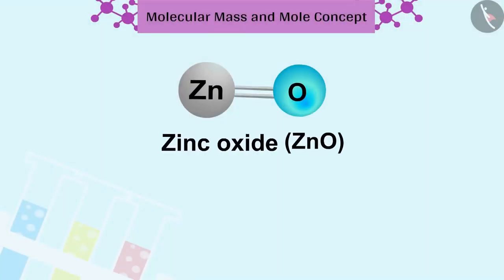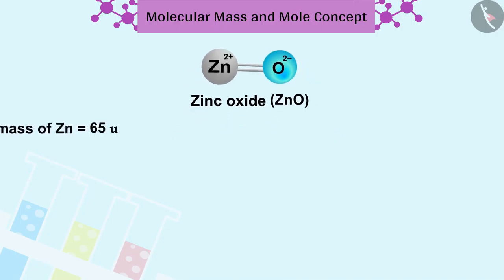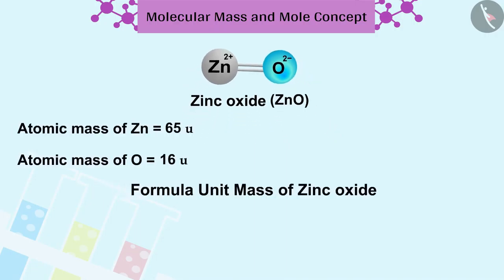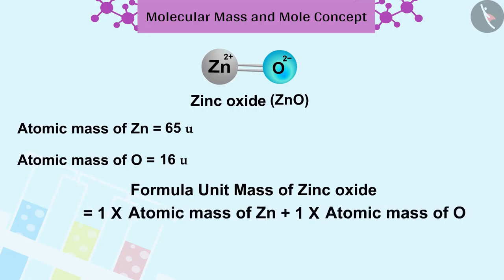For example, a zinc oxide ZnO molecule contains 1 zinc ion, Zn2+, and 1 oxide ion, O2-. Therefore, we have the formula unit mass of zinc oxide. In this way, one can find the sum of masses of a zinc and an oxide ion.